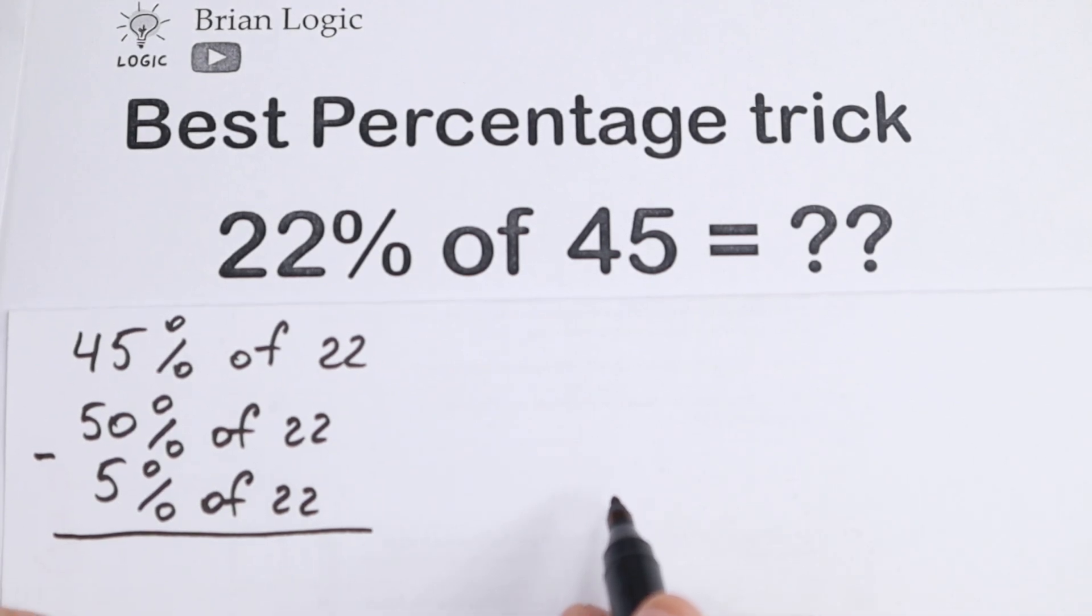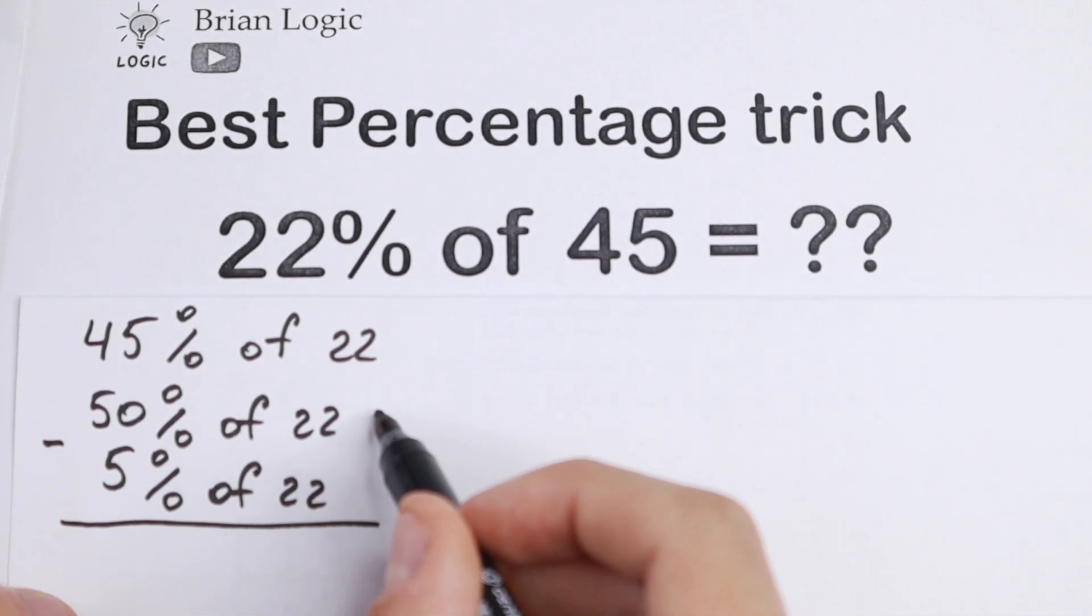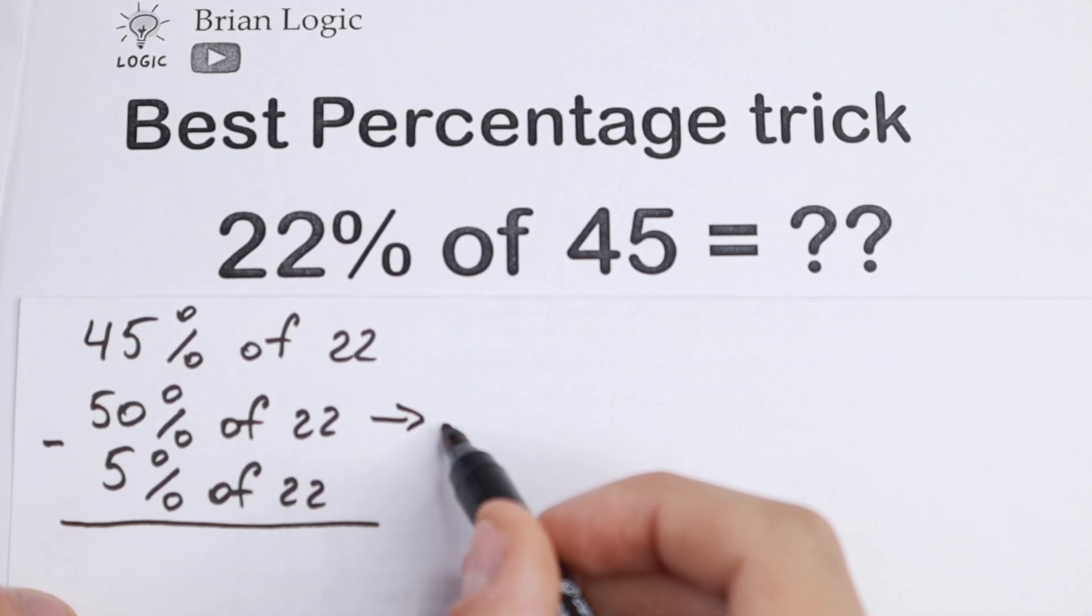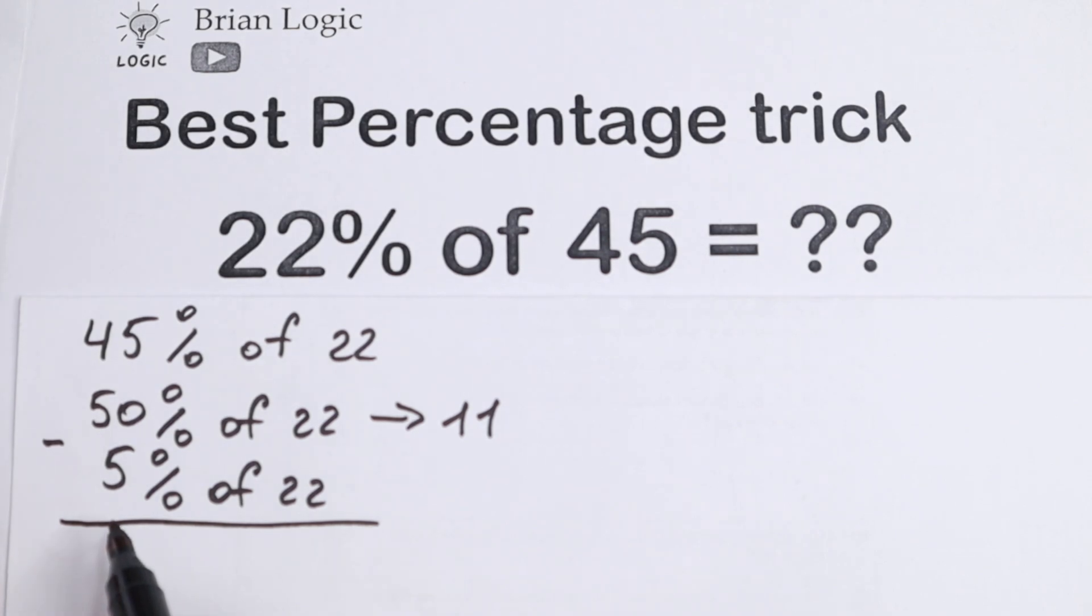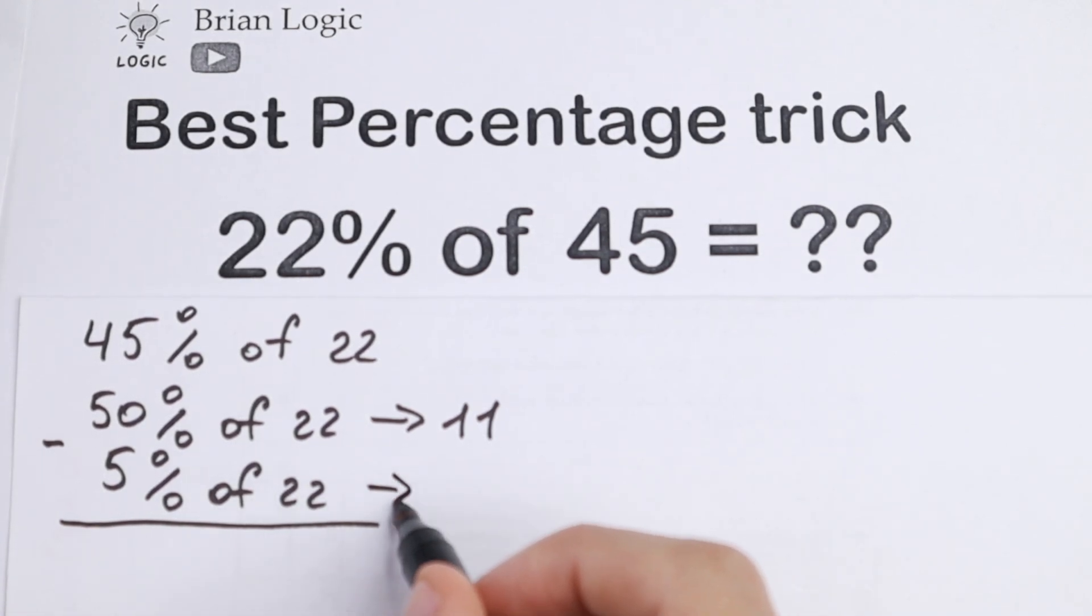This is not hard to find these values, because 50% of 22 is equal to 11, because this is the half. And 5%, this is the tenth part of this 50%. And it's really good, because we divide it just by 10, we will have 1.1.